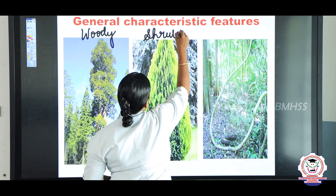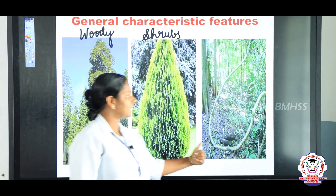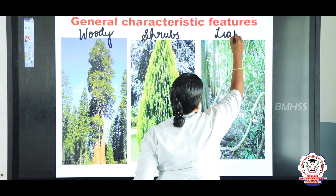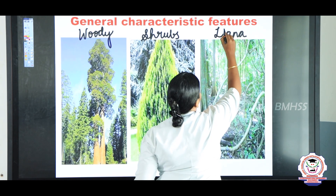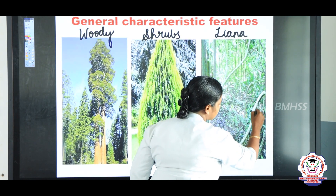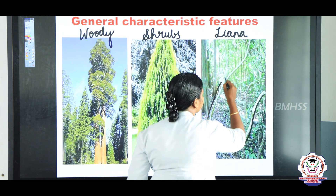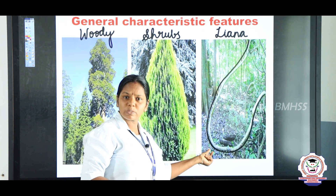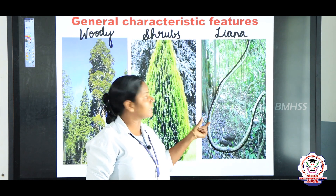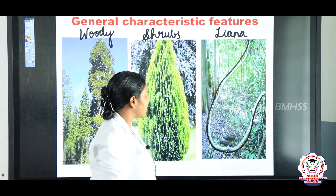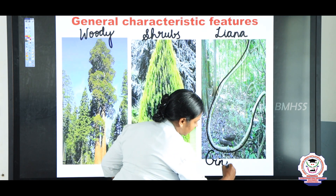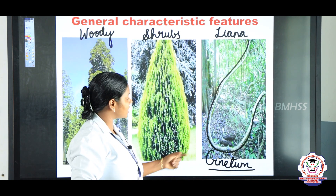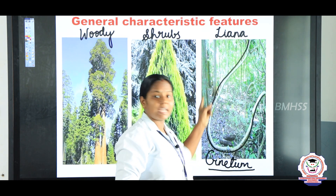Another type is lianas — L-I-A-N-A. What do you mean by liana? Look at this — this is a liana. It is a small vine; we say 'kodi' in Tamil. Some gymnosperms are like lianas, and this can be seen in the plant Gnetum — G-N-E-T-U-M. Gnetum is a type of gymnosperm which appears in the shape of lianas.